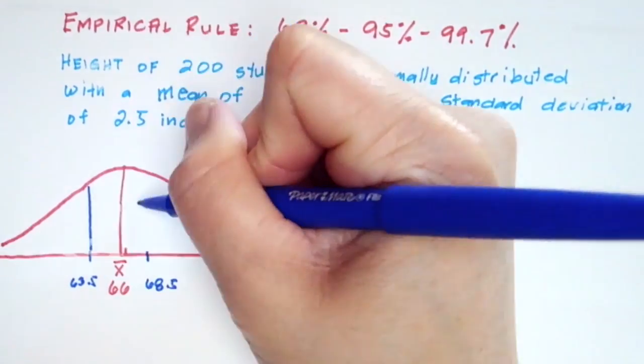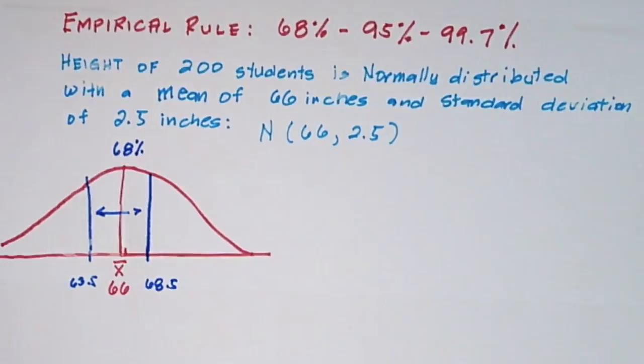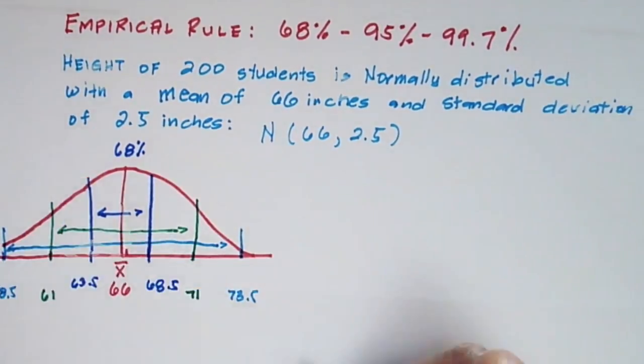We're going to partition our normal curve into one standard deviation, two standard deviation, and three standard deviation using the 68, 95, and 99.7 rule.